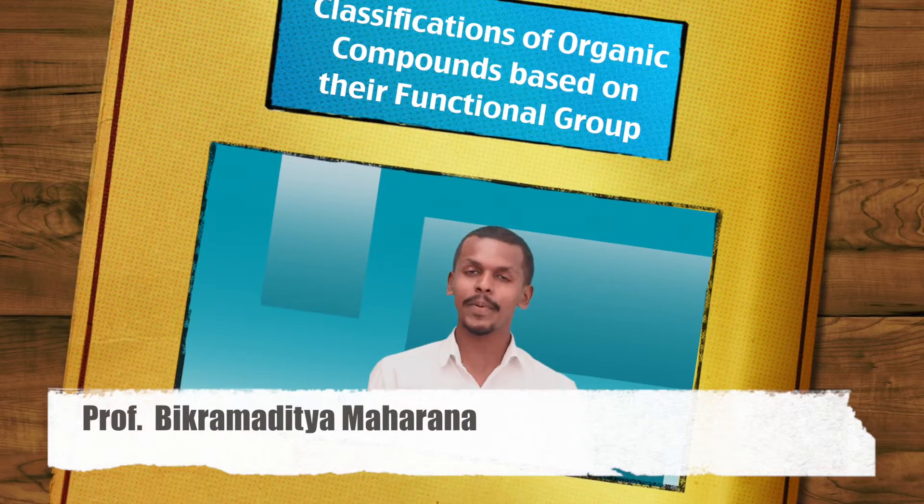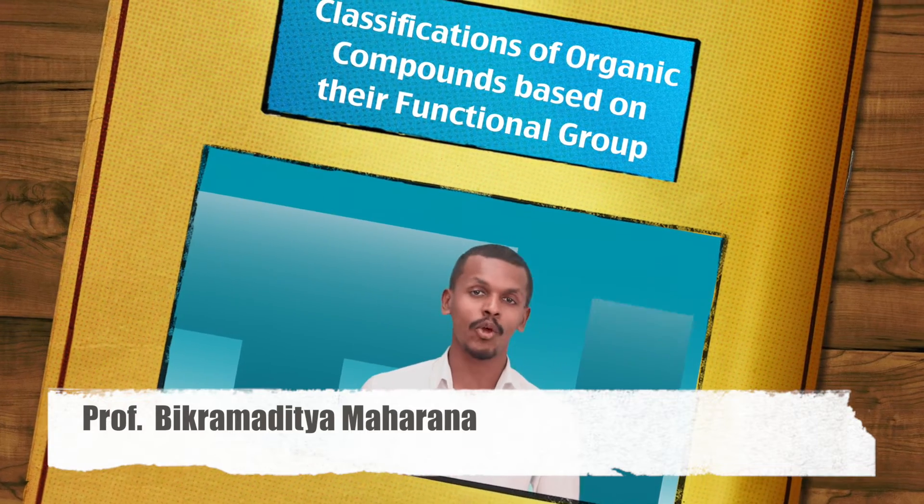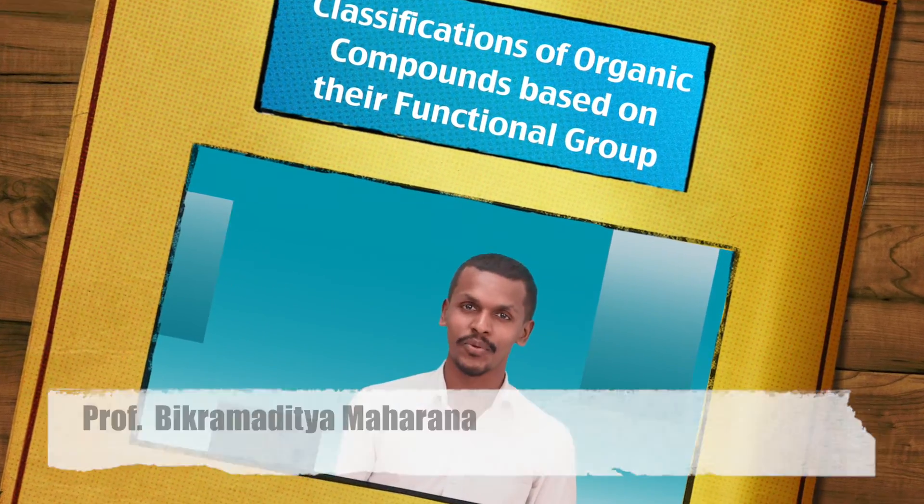Chapter: Basic Principles and Techniques in Organic Chemistry. We are doing the topic: classification of organic compounds based on their functional group. In the previous lecture we studied about the classification based on structure and about what a functional group is. Now we are going to discuss the different classifications of organic compounds based on their functional group.